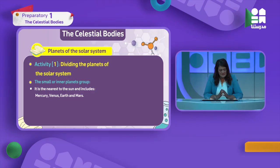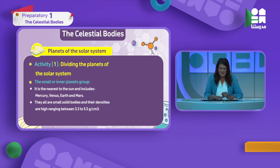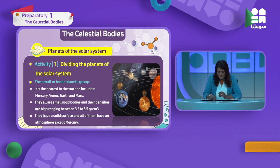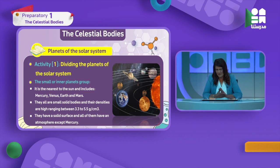Dividing planets: nearest to the sun are Mercury, Venus, Earth, and Mars. They are small, solid bodies with high density ranging from 3.3 to 5.5 grams per centimeter cube. They have solid surfaces and most have an atmosphere - except Mercury, which is the nearest to the sun and has no atmosphere. Saturn has a distinctive ring shape. Jupiter is the biggest, Neptune is the farthest, Mercury is the nearest.